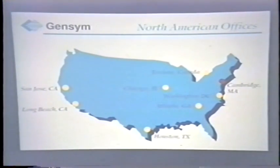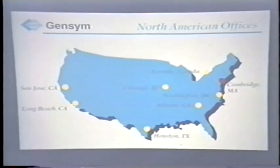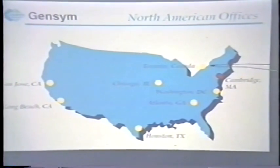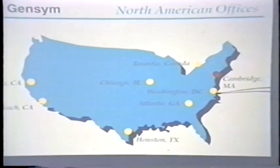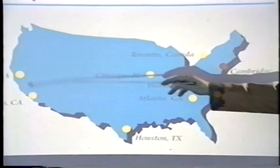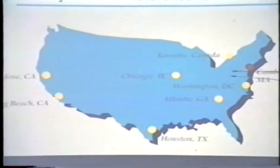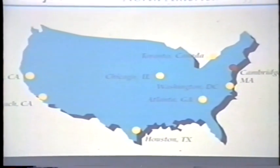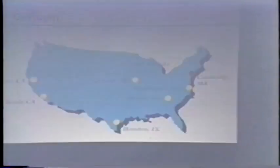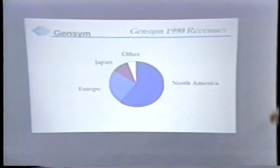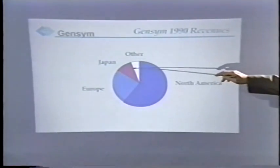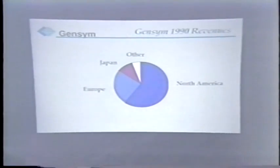We have offices in North America, Europe, and Asia. In North America, our head office is in Cambridge, Massachusetts. We have offices also in Toronto, Chicago, Washington, Atlanta, Houston, and two in California, with new offices in Pittsburgh and Philadelphia — 10 offices altogether in North America. Our business is about 60 percent in North America, about 25 percent in Europe, and about 12 percent in Japan. We're a worldwide company.